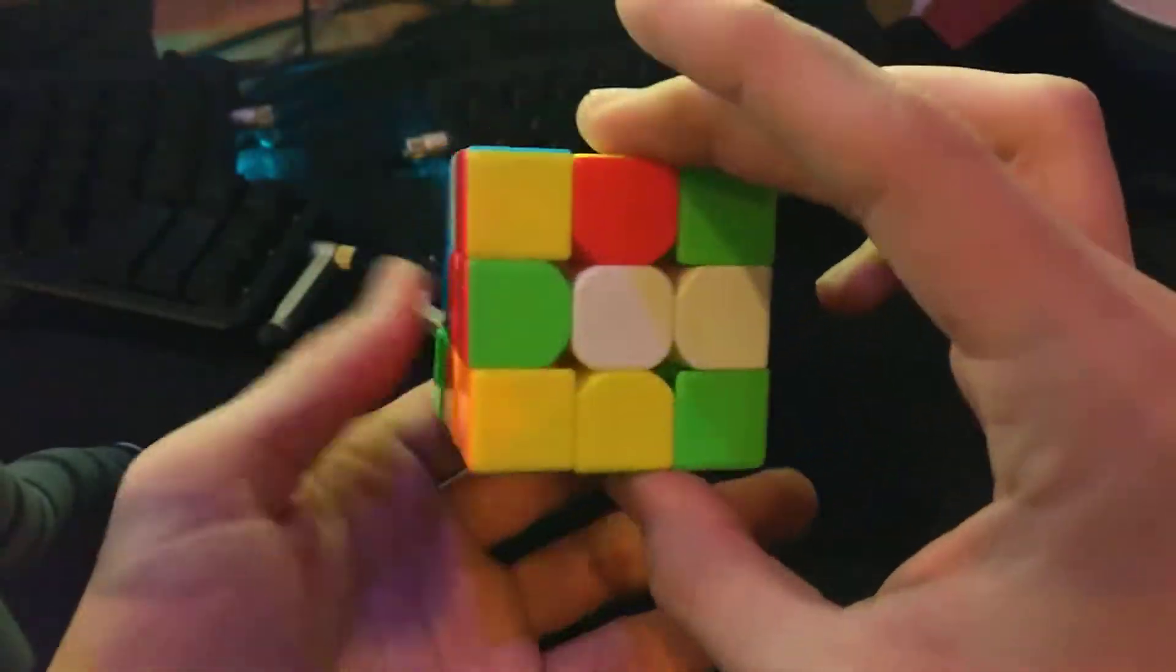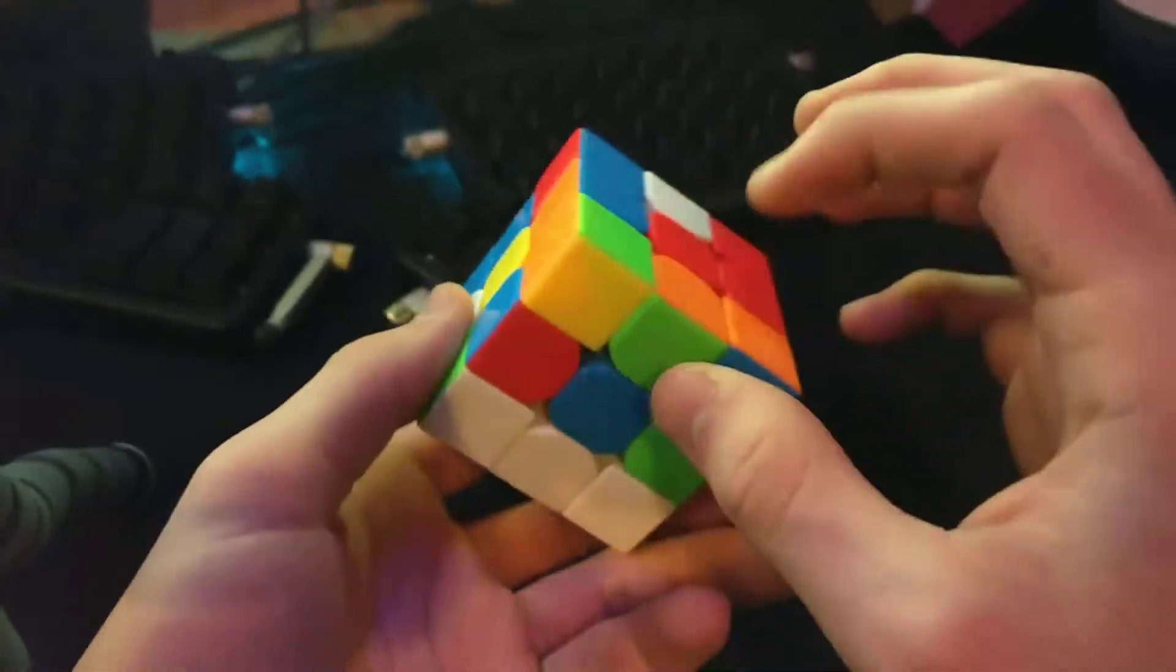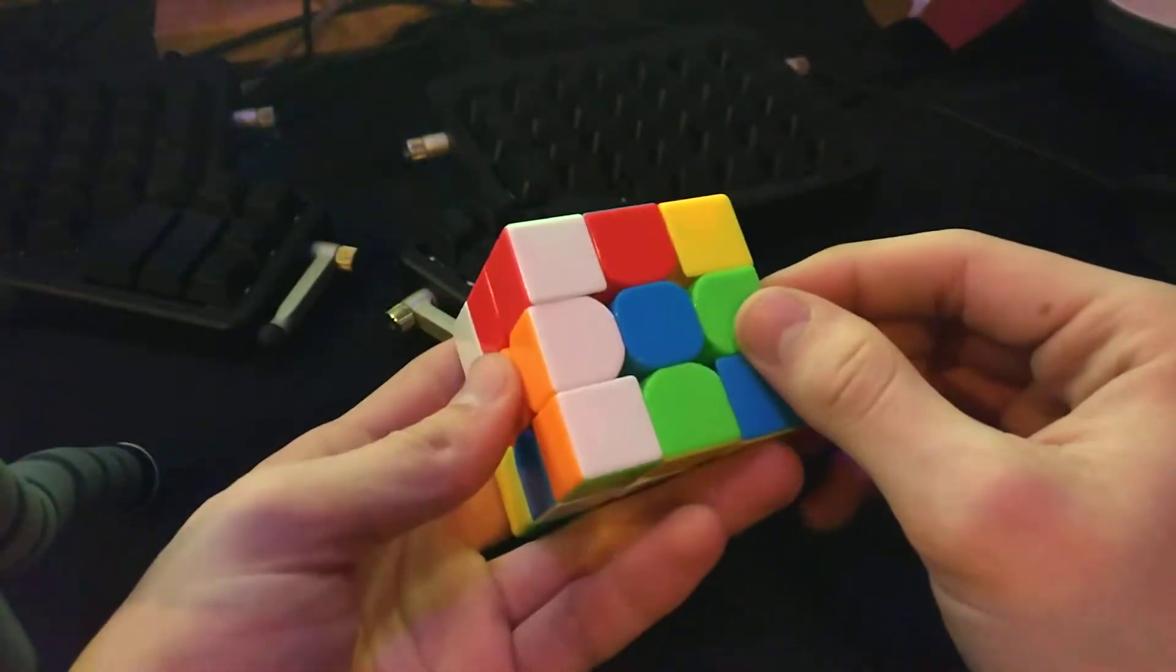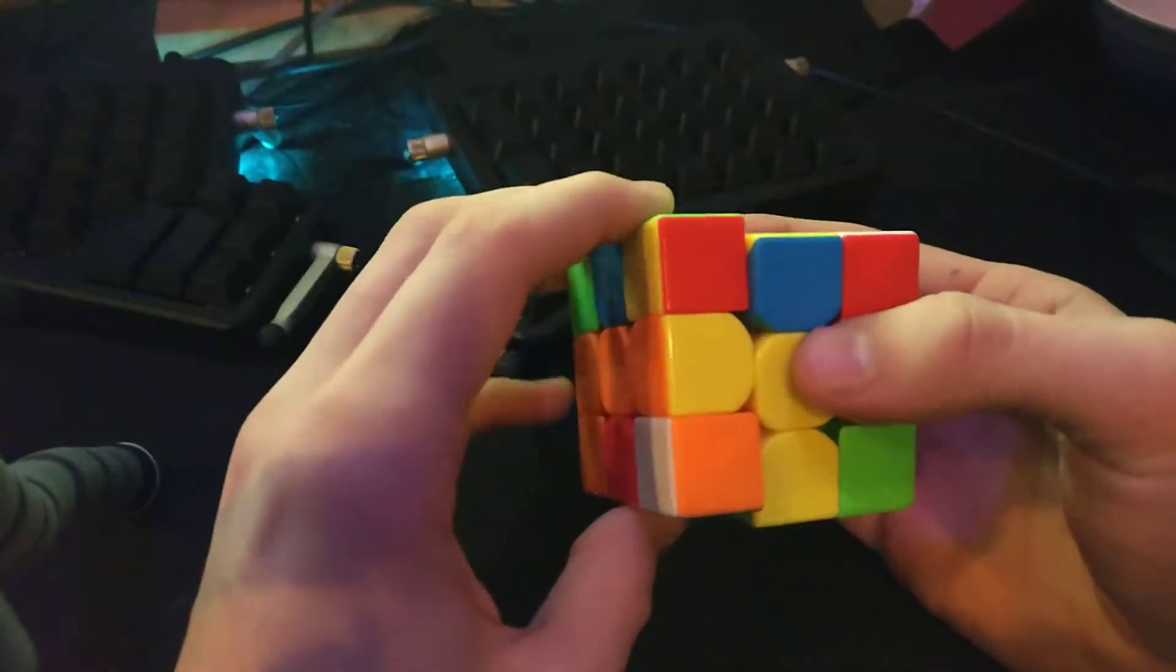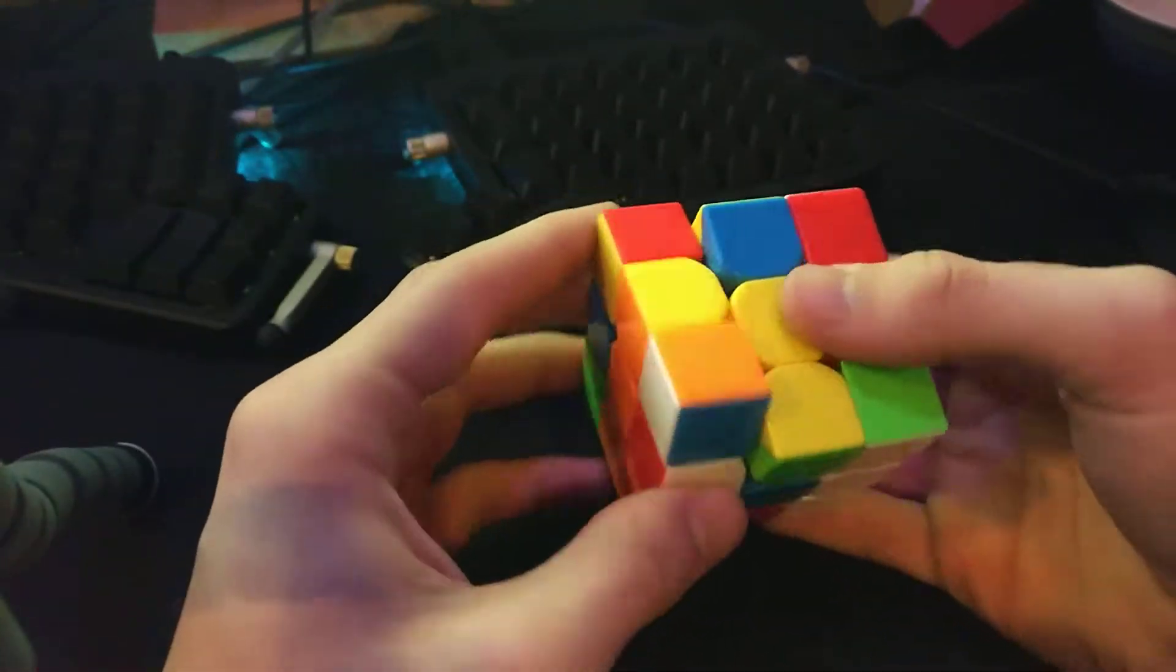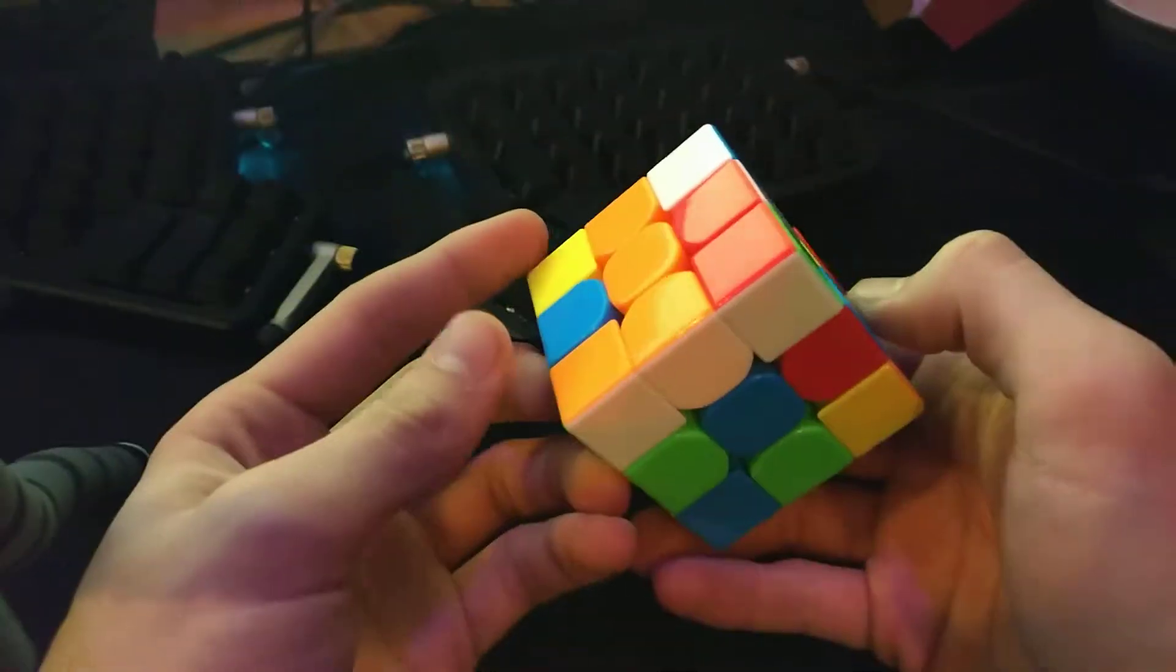You're gonna behold how amazing my blocks are. So I noticed that I've got this block here and then orange green is here, which means if I do a d2 and then I guess from this perspective it'd be an L and then d2 again, it would solve the square. And then while doing that, let's see if I could figure this out.